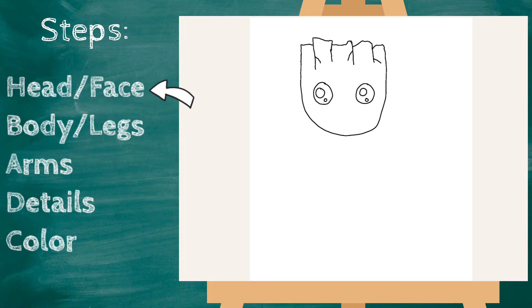Alright, next let's draw his body. I'm gonna start right here with a little bit of a curved line, kind of for his neck, and then a straight line down. Same on the other side - curve in just a little bit and then a straight line down.